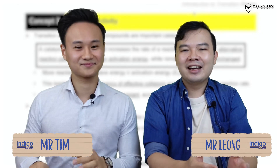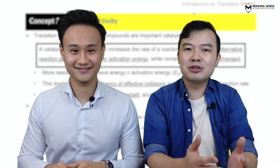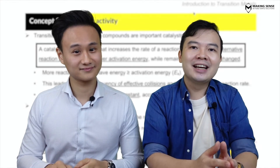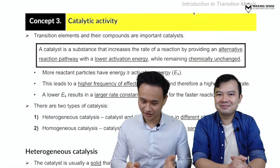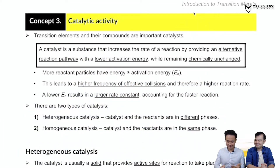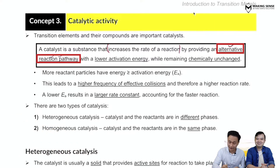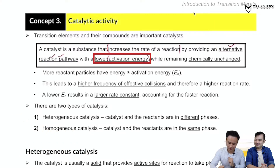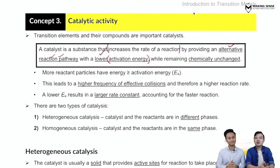Welcome back. We're going to look at more chemical properties of transition metals, the next of which is the fact that transition metals or their compounds are very good catalysts. A catalyst is a substance that increases the rate of reaction by providing an alternative reaction pathway with a lowered activation energy, but it remains chemically unchanged.